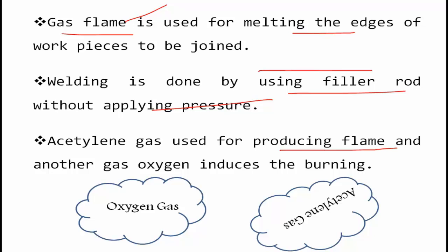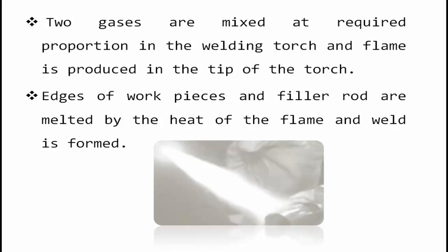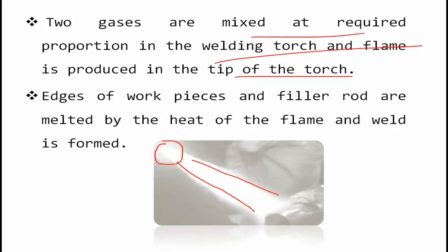Acetylene gas is used to produce the flame and oxygen gas aids the burning. Depending on the application and need, we have to use the appropriate proportion. The two gases are mixed in liquid proportions in the welding torch and a flame is produced at the tip of the torch. The flame comes out from the torch and the metals are melted.